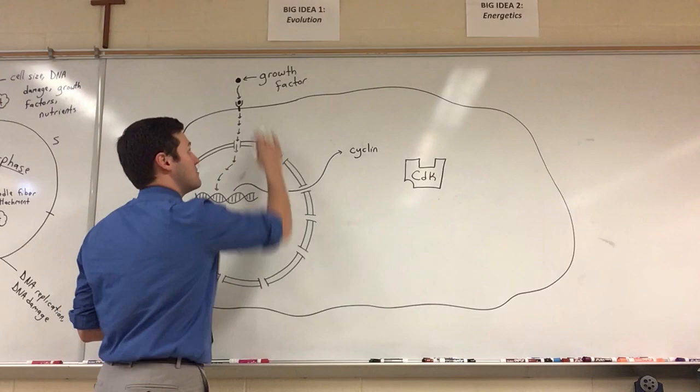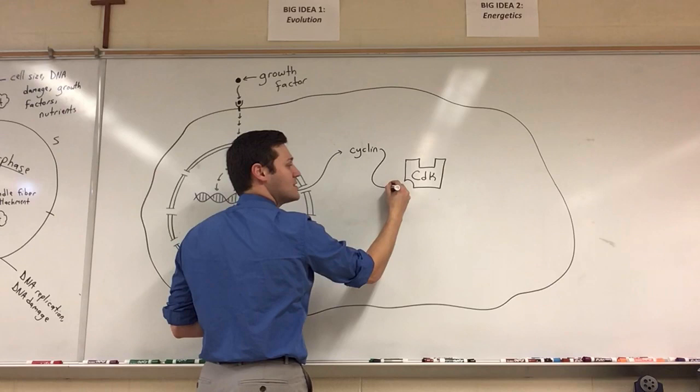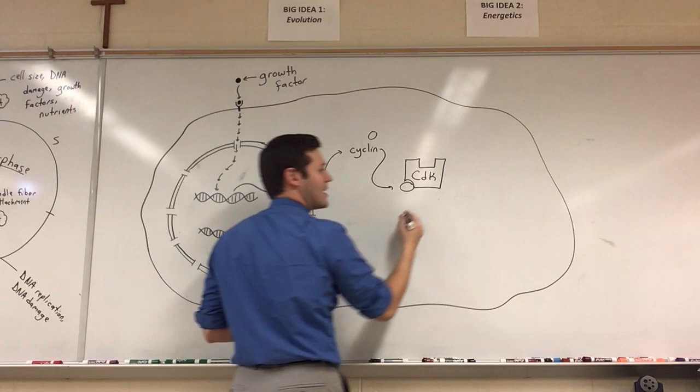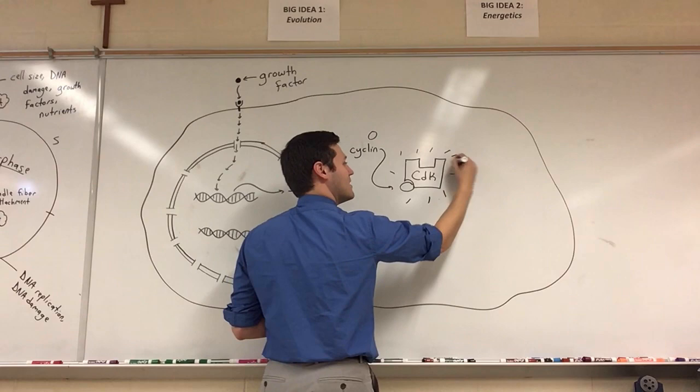When the cell is ready to divide, it will produce these cyclin molecules, these proteins, that will bind to an allosteric site. So let's say the cyclins are circles. It will bind to an allosteric site and activate this cyclin CDK complex.